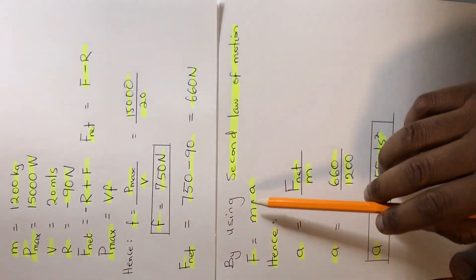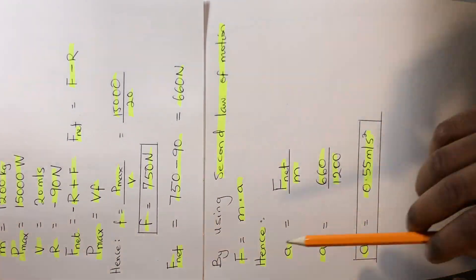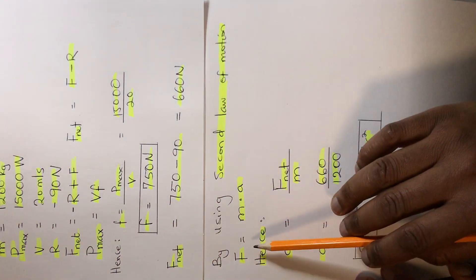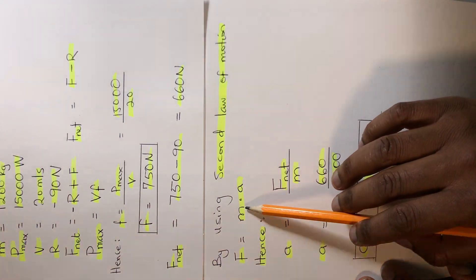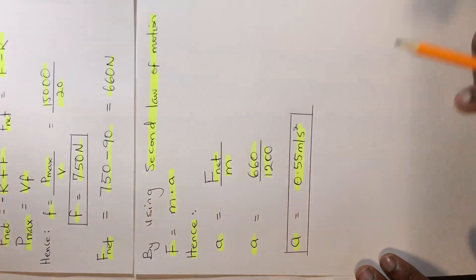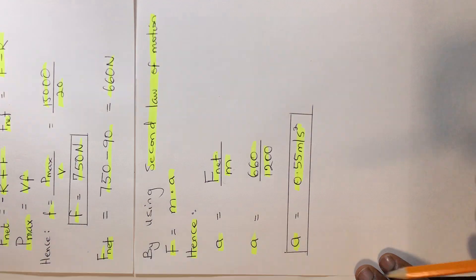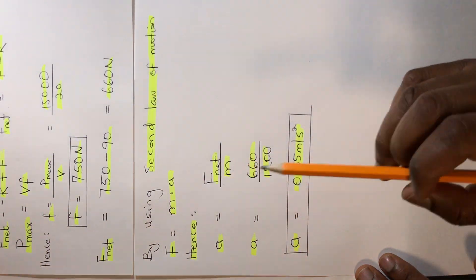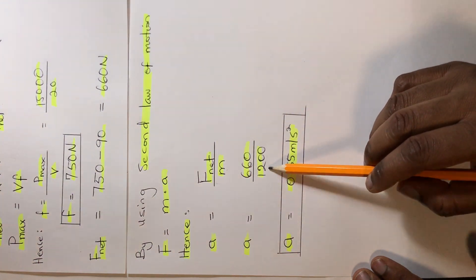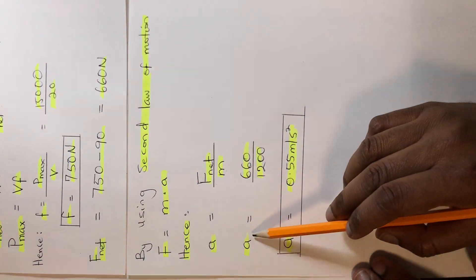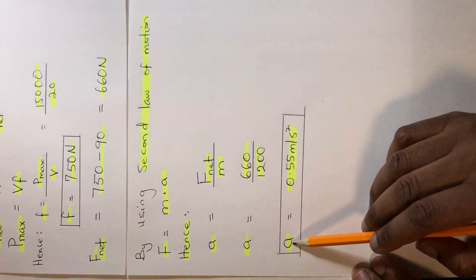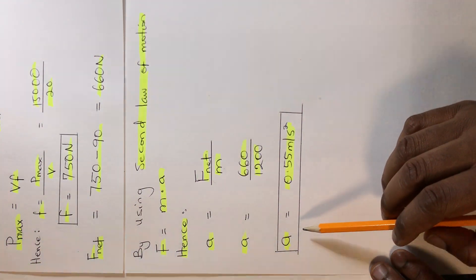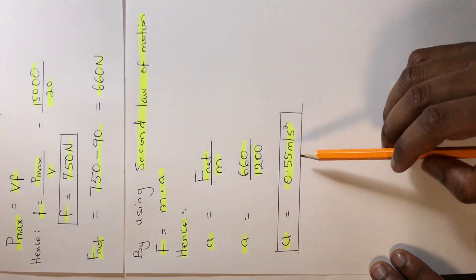Using Newton's second law of motion, F equals mass times acceleration. Therefore, acceleration equals F_net over mass, which gives us 660 divided by 1,200, resulting in an acceleration of 0.55 meters per second squared.